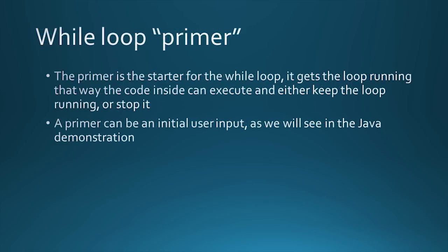In some cases you'll need a primer before the while loop. A primer is something that gets the while loop started. In the case of the restaurant calculation, we need to ask the user for the first input to make sure that it isn't null. That way, if it isn't, we can execute the code inside the while loop. Without that primer, the while loop will never run.